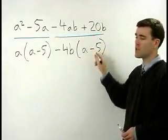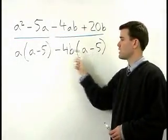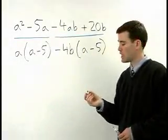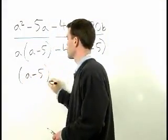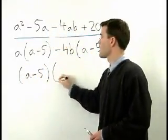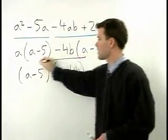Notice the change of signs. Now we have an a minus 5 in each of our two terms which factors out and leaves us with a minus 4b in our second set of parentheses.